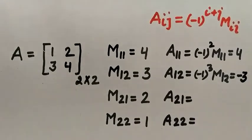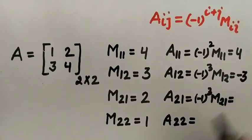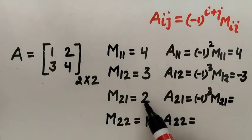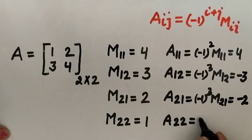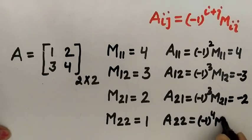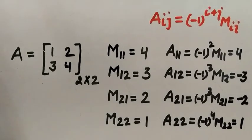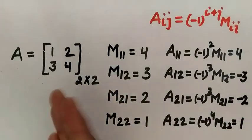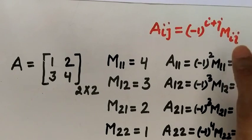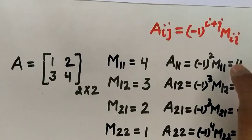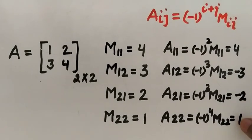For A21: (−1)^(2+1) × M21 = (−1)^3 × 2 = −2. For A22: (−1)^(2+2) × M22 = (−1)^4 × 1 = 1. So the cofactors are A11=4, A12=−3, A21=−2, A22=1. In this way we can find minors and cofactors of elements of a square matrix of order 2.